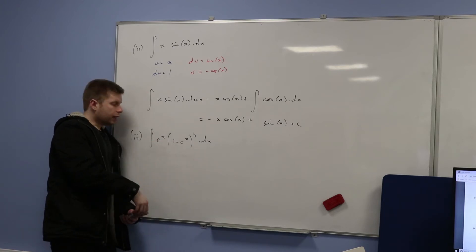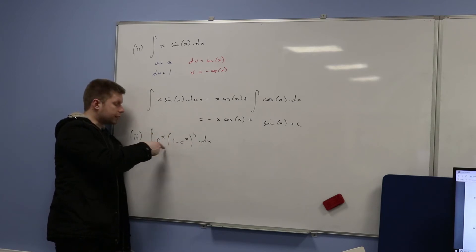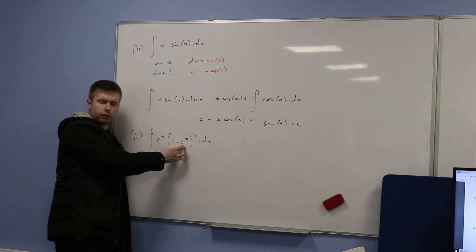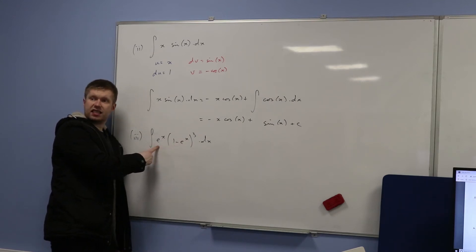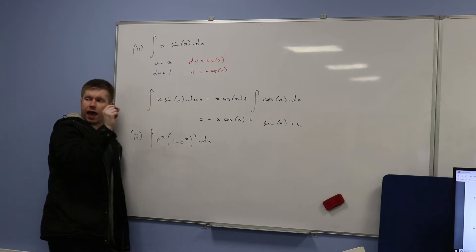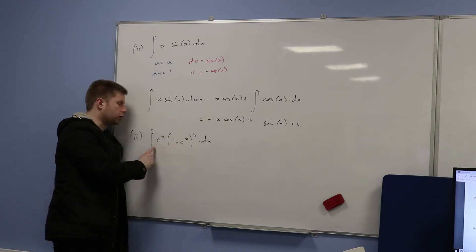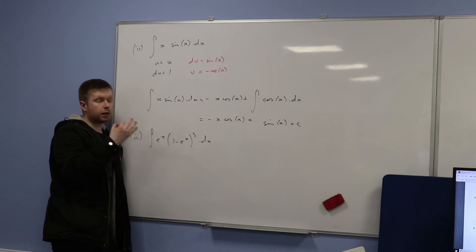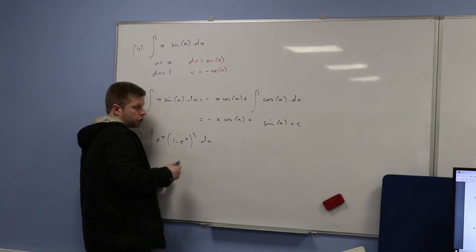Remember: if (1 − eˣ) is the awkward function — a function buried within it — notice that the thing you're multiplying by is a version of its derivative. If I differentiate (1 − eˣ), I get negative eˣ, which is something close to that. If the derivative of the inner function looks like the thing you're multiplying by, then substitution will probably work better. So actually in this case you should use substitution.